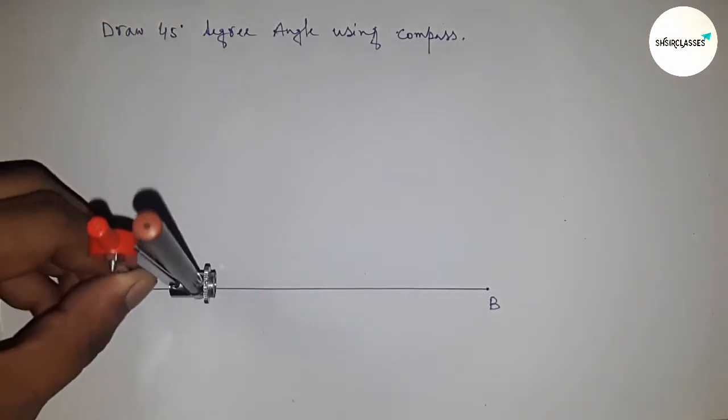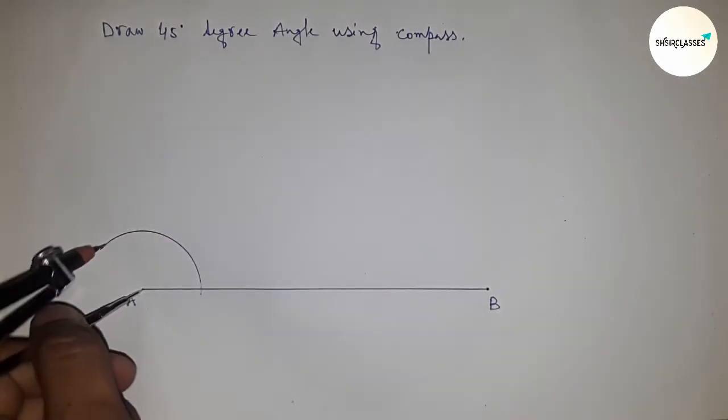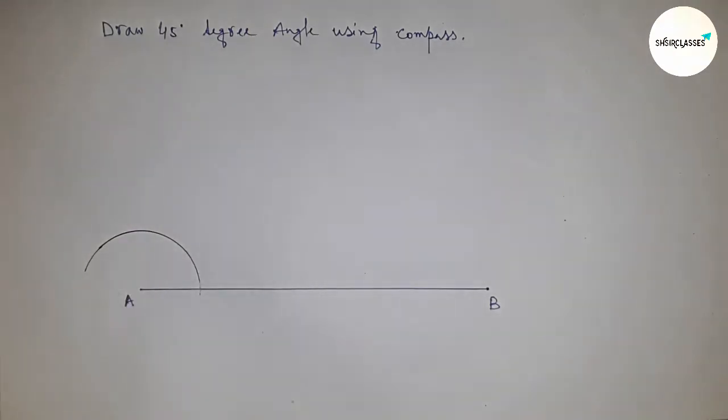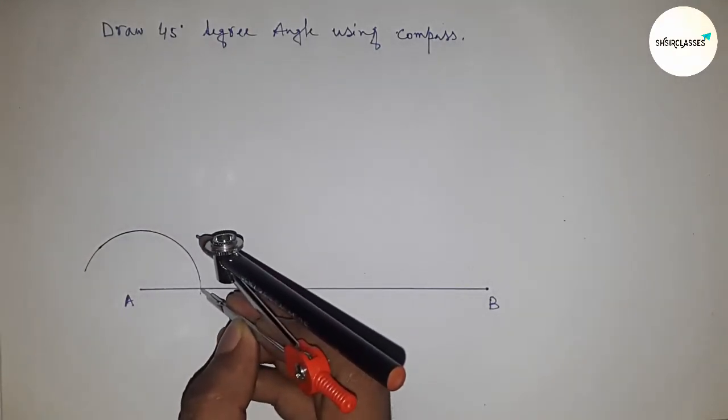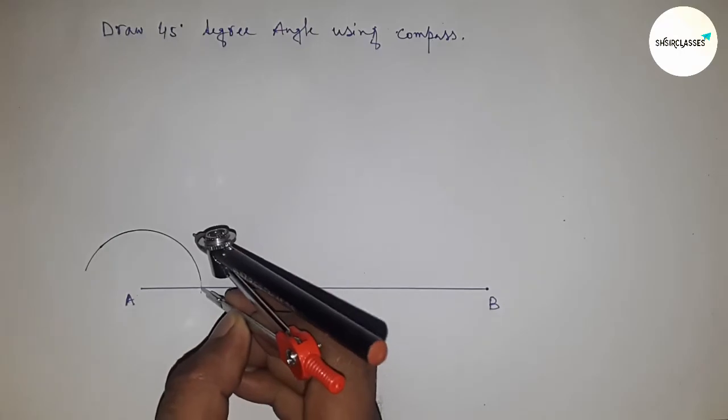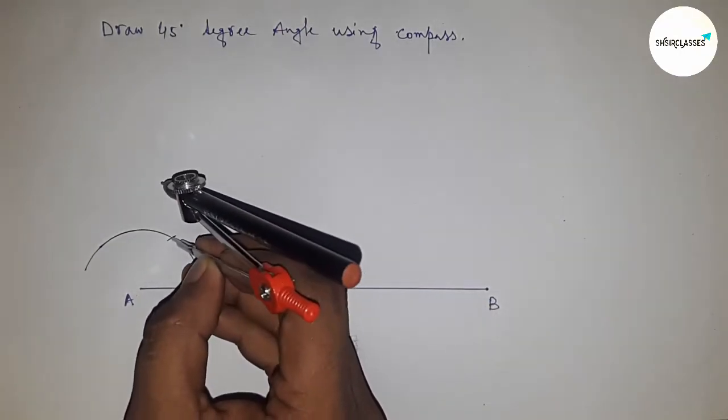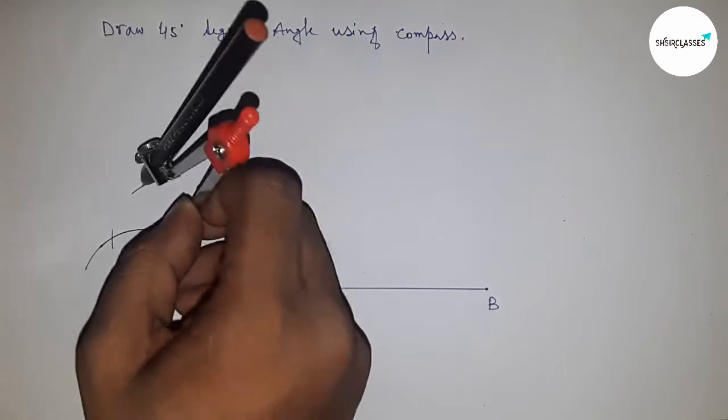Take any length with the compass and draw an arc. We'll first construct a 90-degree angle. With the same length, cut the arc this way, and with the same length, cut the arc again this way.